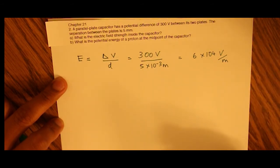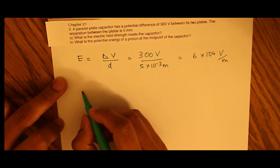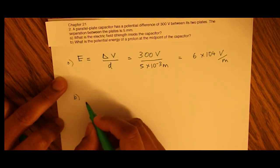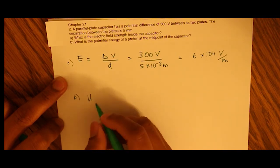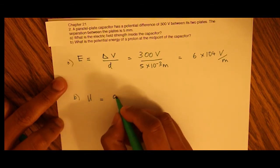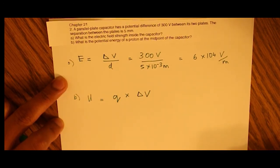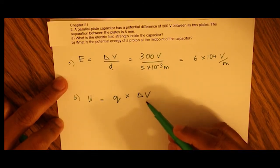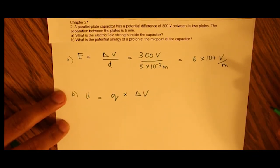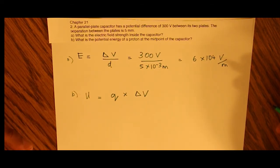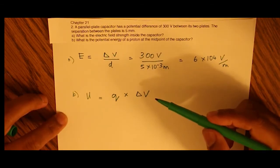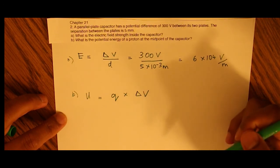The second half of the question asks us to find the potential energy of a proton. We represent that potential energy as U, and that equals the charge of the proton times the voltage difference. We're asked for the voltage at the midpoint of the capacitor. At the midpoint, the voltage would be 150 volts because that's right in the center between the two plates.